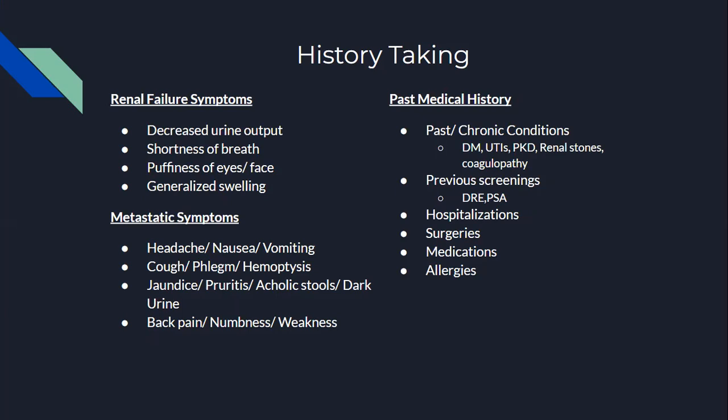For metastatic symptoms, ask the patient about brain symptoms — such as headache, nausea, or vomiting — for possible brain spread. For lungs, ask about cough, phlegm, or hemoptysis. For the liver, ask about jaundice, pruritus, acholic stools, pale stools, or dark urine. For their back, ask about back pain, any numbness, weakness, or any recent loss of continence.